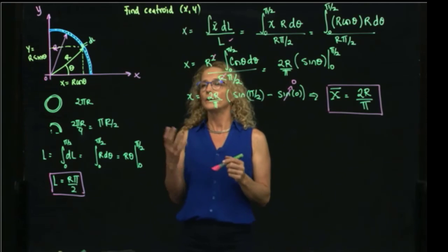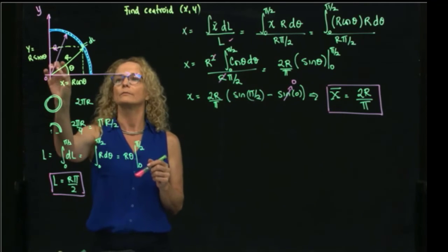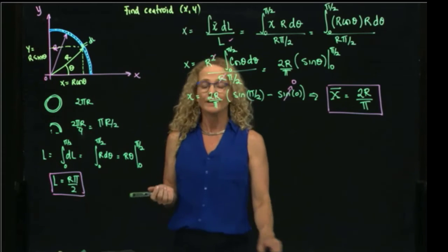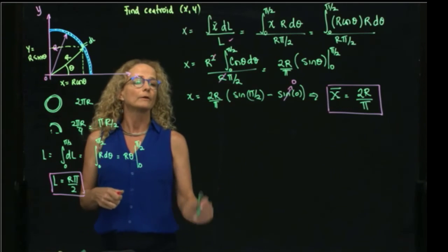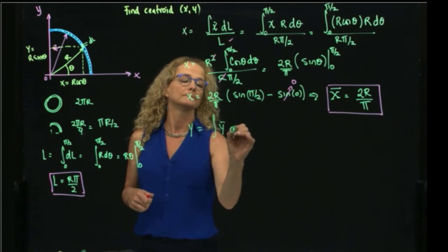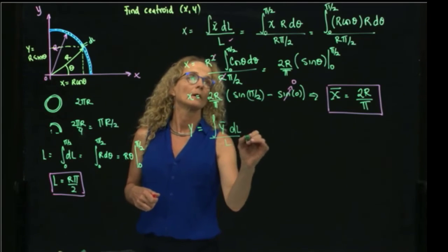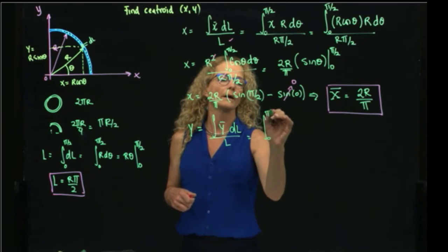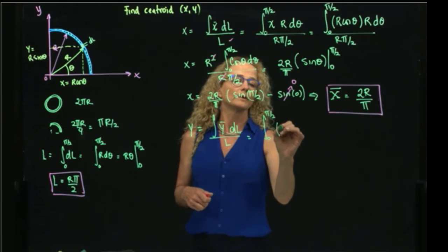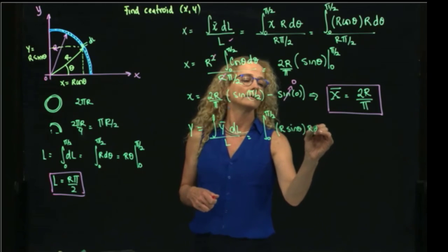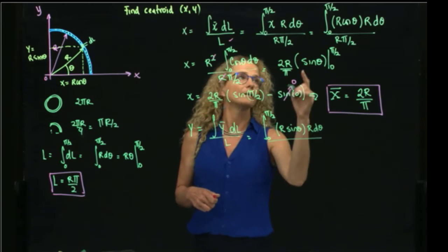So we know that this will be the location of the centroid of this figure if we do exactly the same, but for y, we get something similar. And then we will have that this is 0 to π/2. In this case, we have r sine of theta, r dθ, divided by the total length.